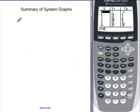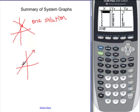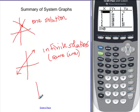So let's make a summary. We can have a graph that has one point in common. We can have a graph that has infinite solutions or all points because they're the same line. And we can have a system that has no solution because they are parallel.